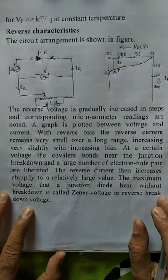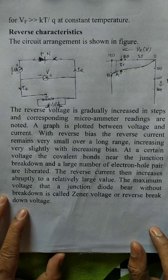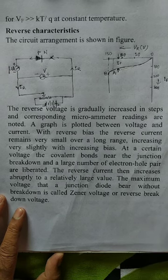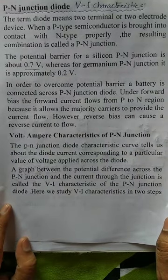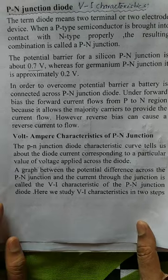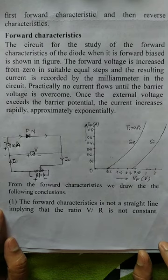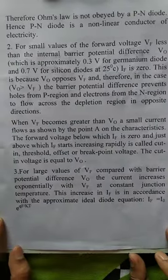So, this was about forward biasing characteristics and reverse characteristics. In the next video, we will discuss the p-n junction diode as a rectifier. Before closing this video, I am uploading the pages one by one so that you can note them for your convenience.